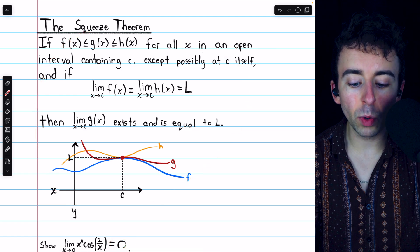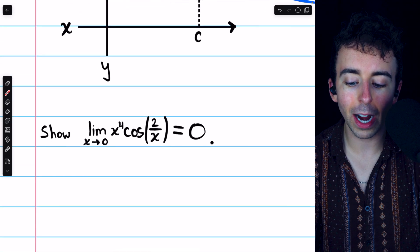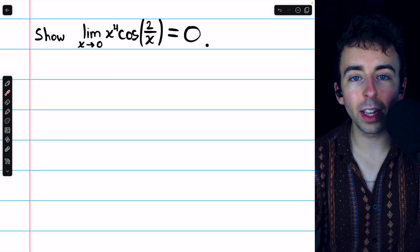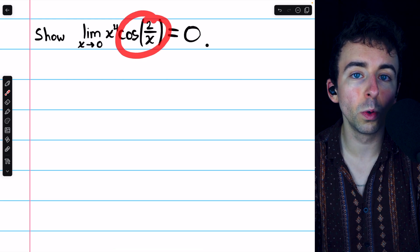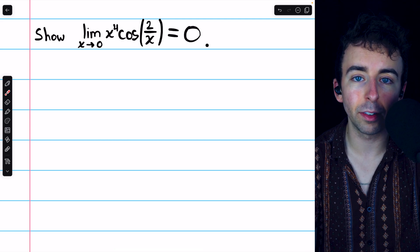To use this theorem, we need to bound our function x to the 4 times cosine of 2 over x between two other functions which have a common limit. To do this, it's important to know your trig functions and that cosine of 2 over x is bounded between negative 1 and positive 1.